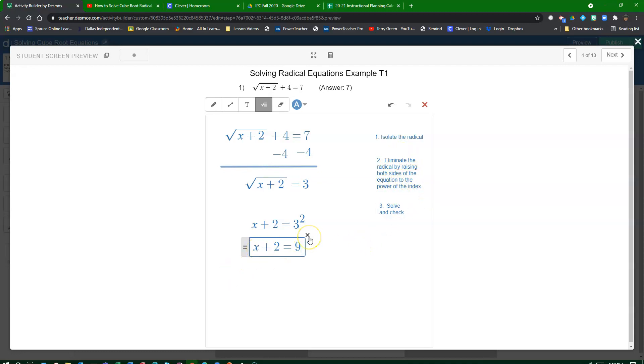Now let's solve this equation and check it. If x plus 2 is equal to 9, then that means x is equal to 7 by subtracting 2 from both sides.